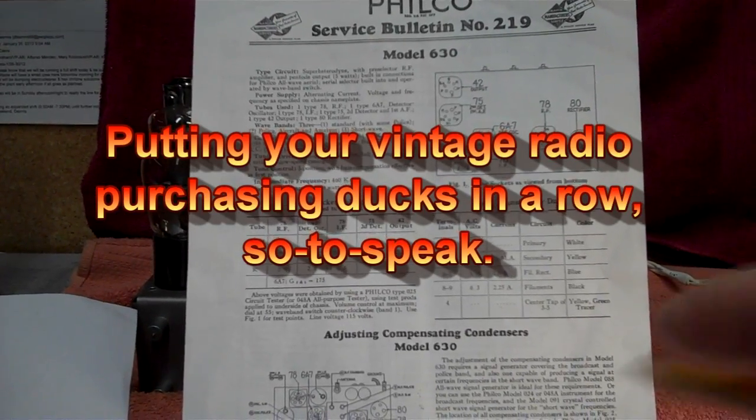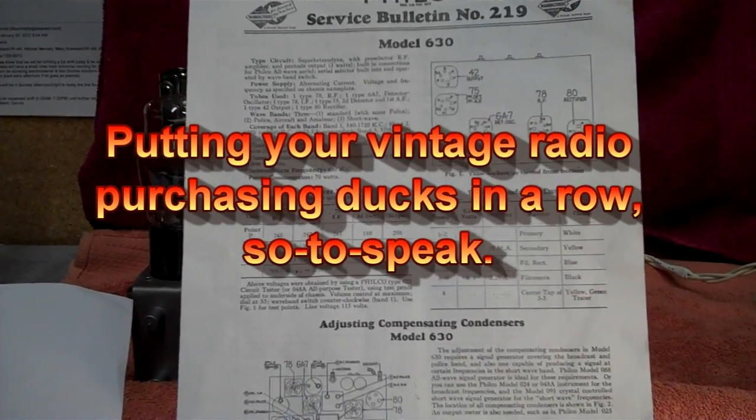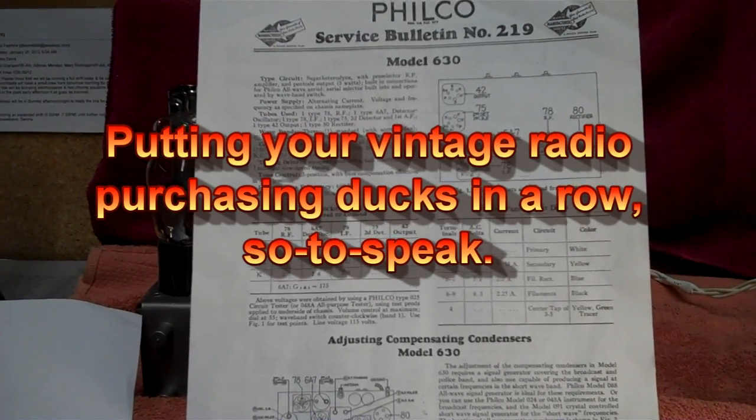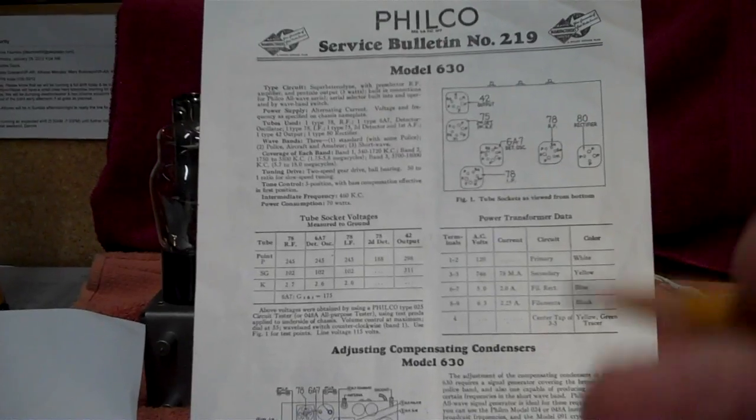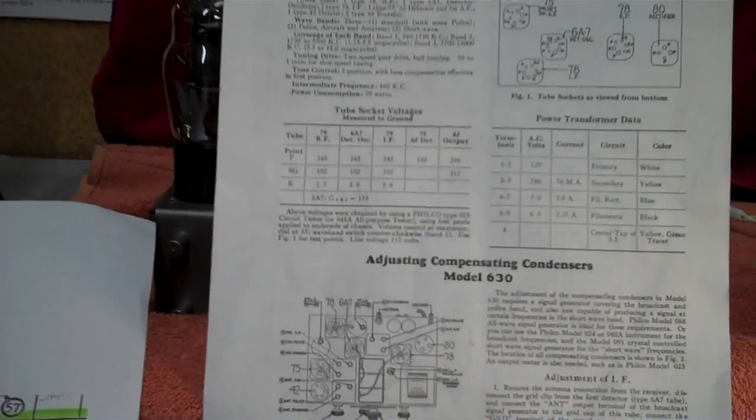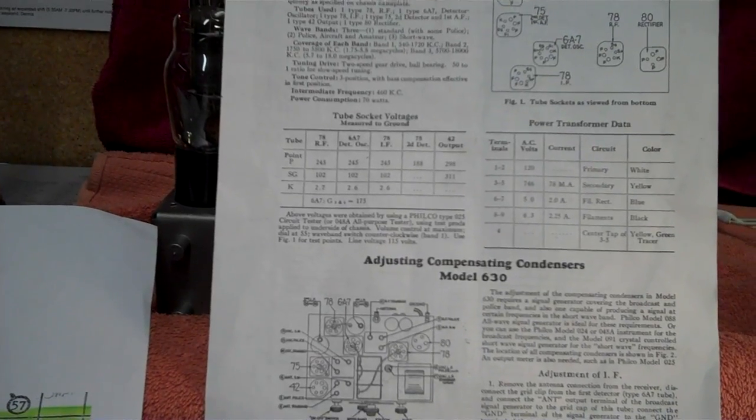And then, if I can find dial scales, all sorts of things. Sometimes there'll be missing knobs. I'll find out if reproduction knobs are available. I like to have things available before buying a radio and beginning the restoration and repair.